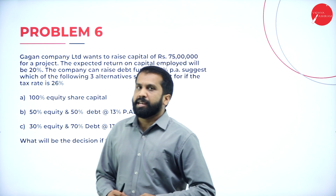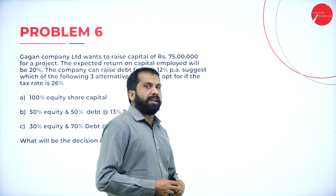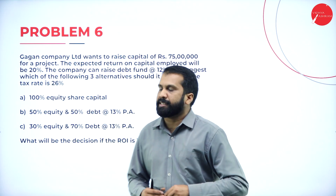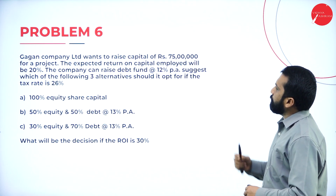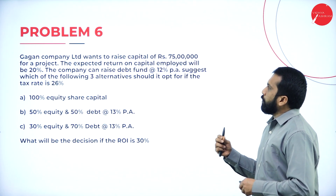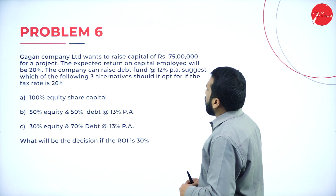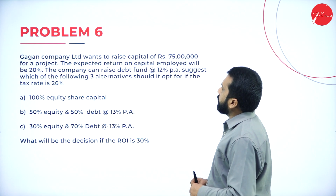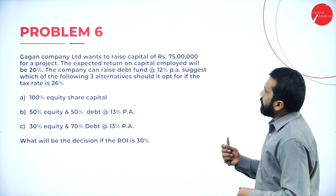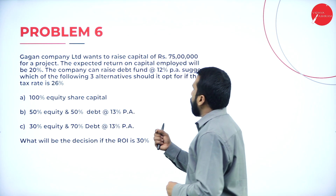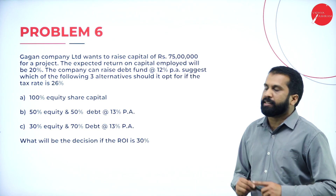We are on problem number 6. We are done with 5 problems in Capital Structure and we are into problem number 6. In this, Gagan Company Limited wants to raise capital of Rs. 75 lakh for a project. The expected return on capital employed will be 20%. The company can raise debt fund at 12% per annum. Suggest which of the following three alternatives should it opt for, if the tax rate is 26%.